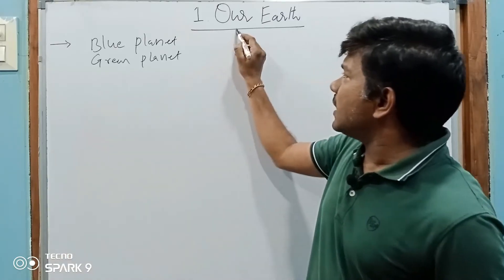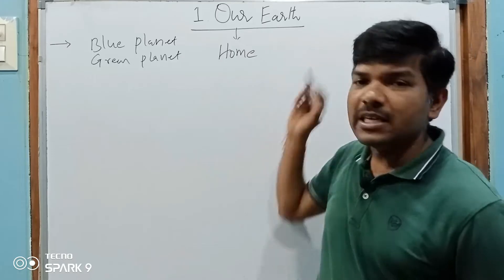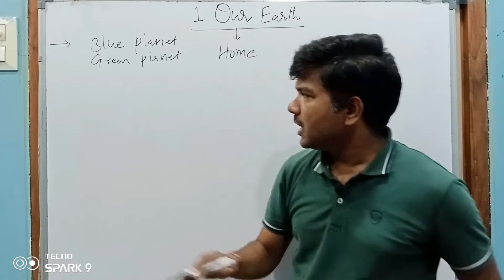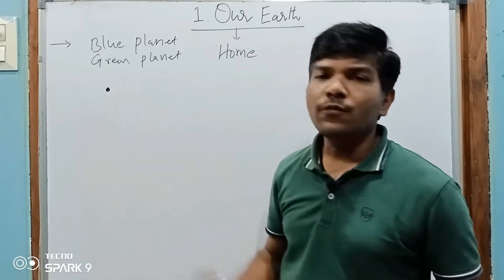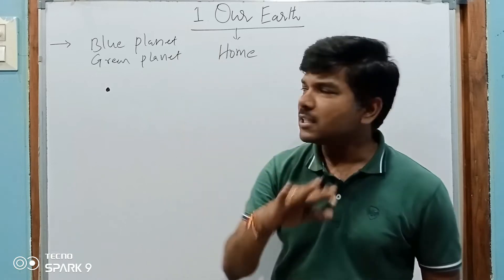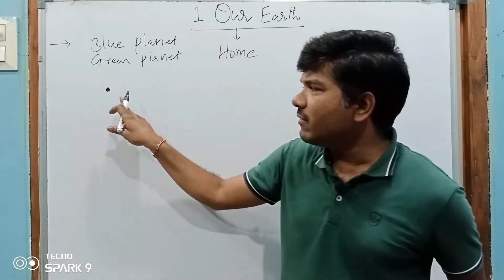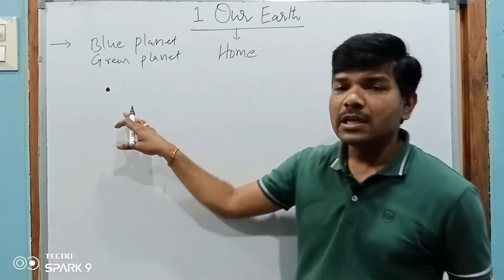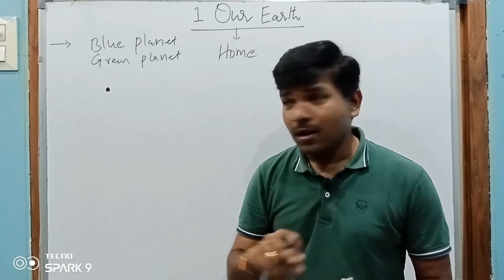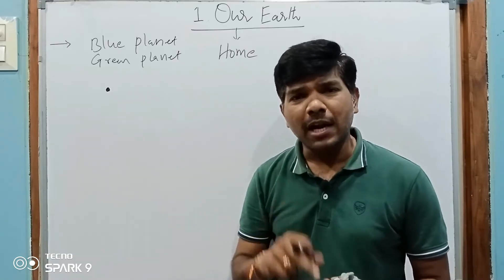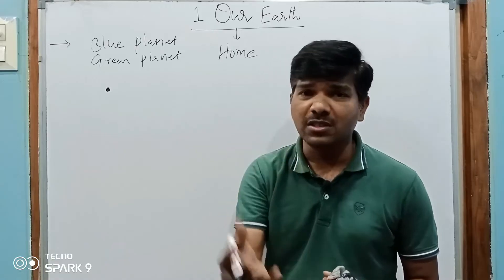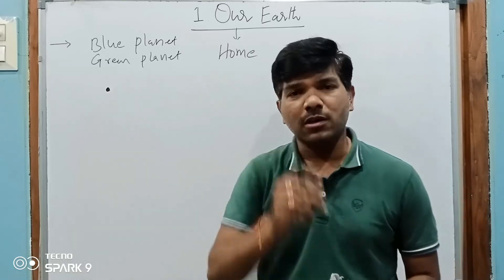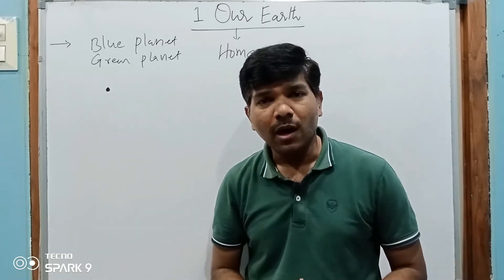Our earth is called our home. If you observe this home from space, it will look like a tiny dot — a small dot. All the plains, plateaus, surroundings, countries, districts, mandals, villages, and houses — everything exists on that small dot. How wonderful, how very amazing it is!